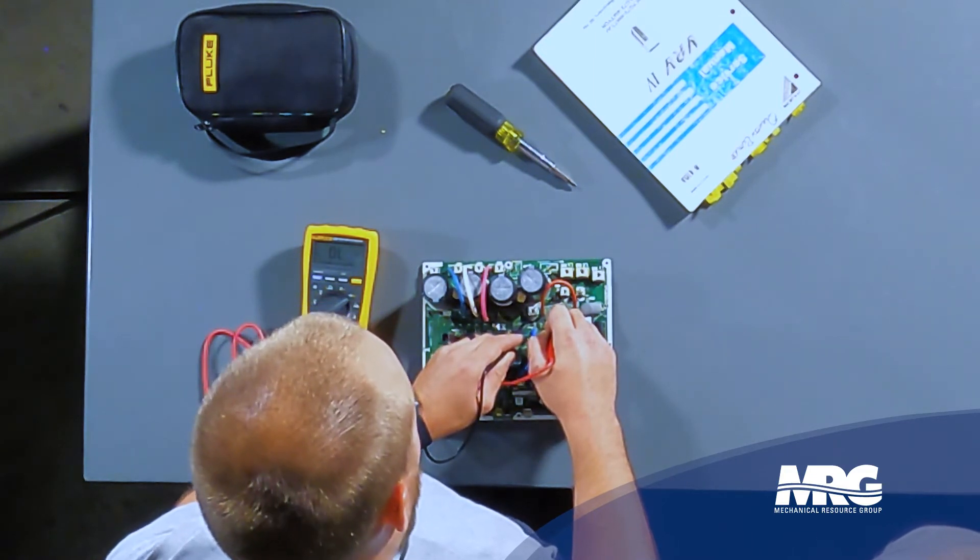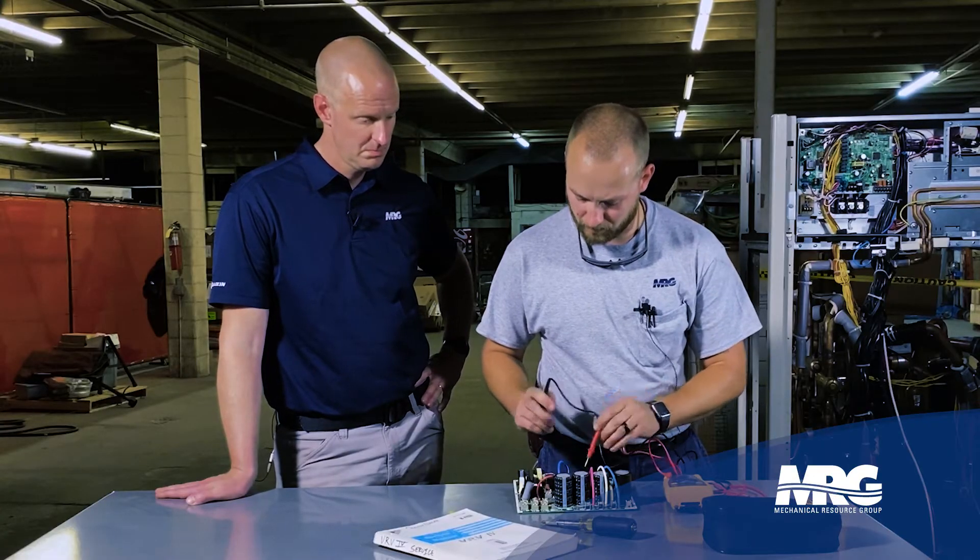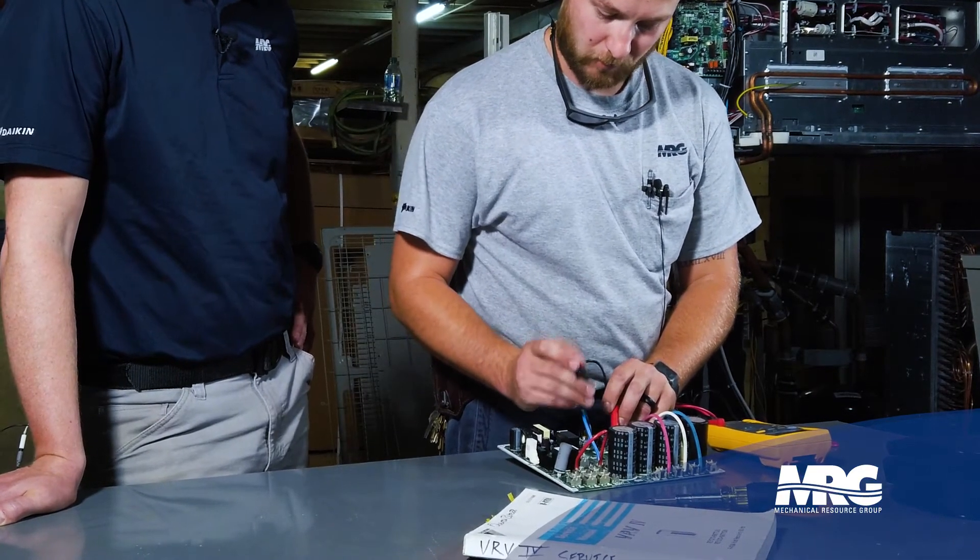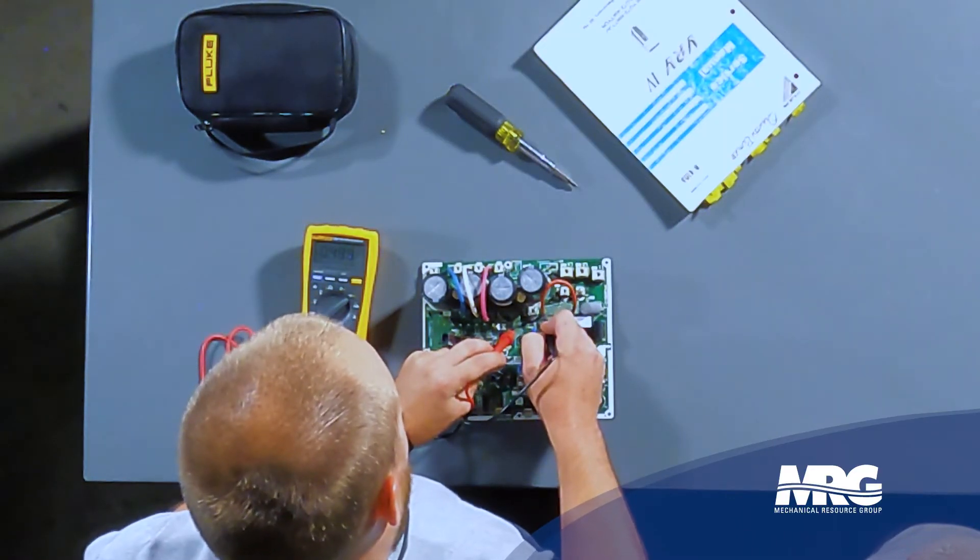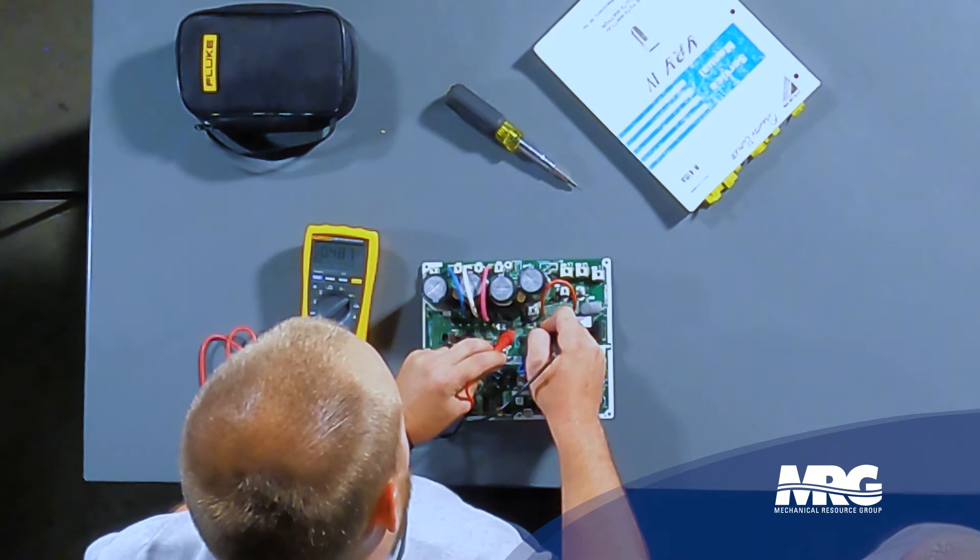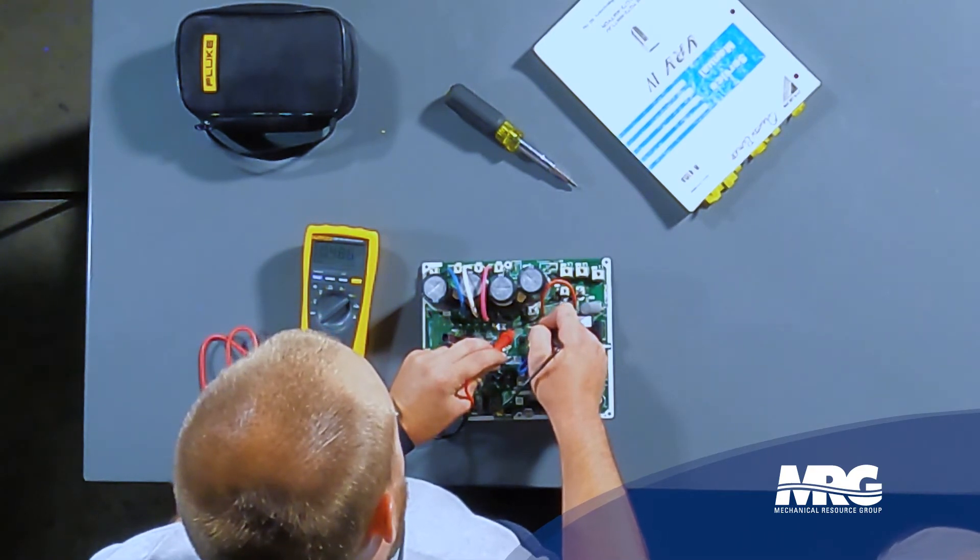We're going to take our red meter lead now and put it on the negative terminal. We're going to take our black meter lead and start the process all over, but this time you're going to notice we have 0.487 volts DC. We're going to go to the second terminal, same thing, and then our last terminal, we have that same value again.